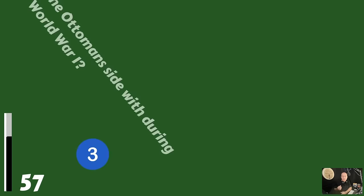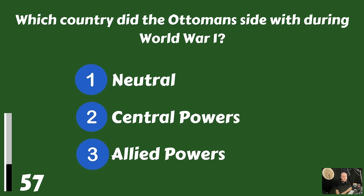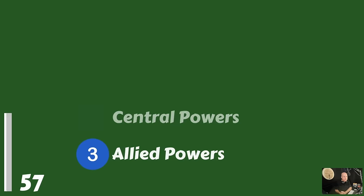Which country did the Ottomans side with during World War One? Were they neutral, did they ally with the Central Powers, or were they allied with the Allied Powers? The Ottoman Empire sided with the Central Powers.